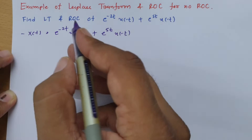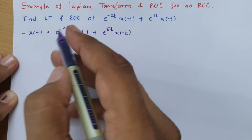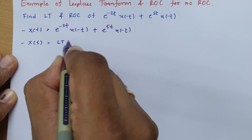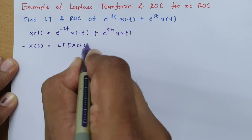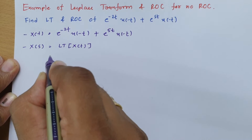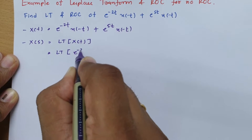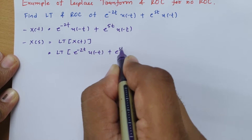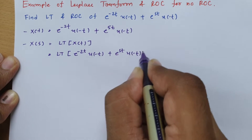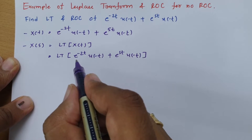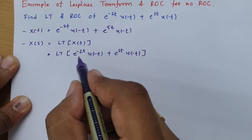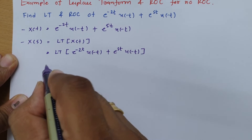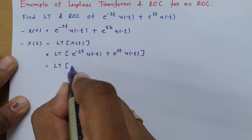First I will explain the calculation of the Laplace transform of this signal. The Laplace transform of x(t) is X(s). By applying the linearity property, we can solve each term of the Laplace transform separately.